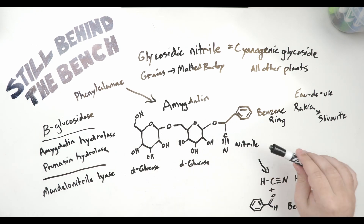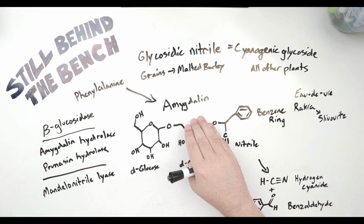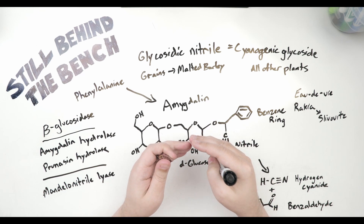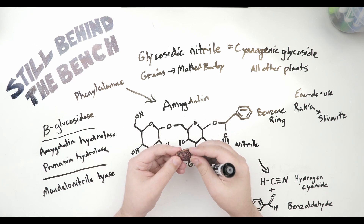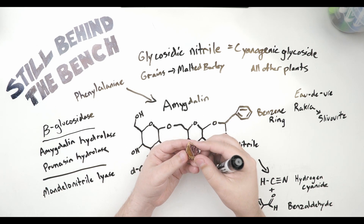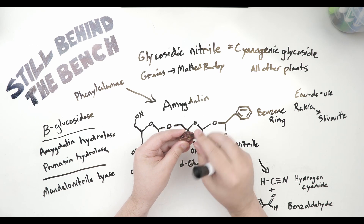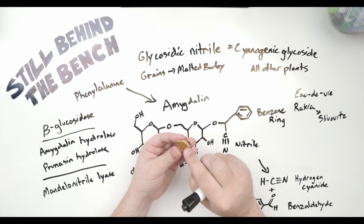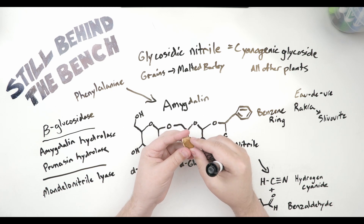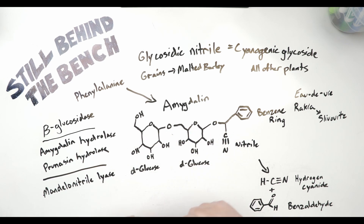Amygdalin consists of two glucose molecules attached to a nitrile and a benzene ring, and it is produced from the amino acid phenylalanine. If you're making a distilled plum or apricot spirit and decide not to take the stones out, that stone is a seed casing called the endocarp. If it breaks open during mashing, due to heating, or if there are holes in it, the seed — which contains amygdalin and looks quite like an almond — is released, and now you have amygdalin in your mash. Along with that amygdalin come three enzymes.